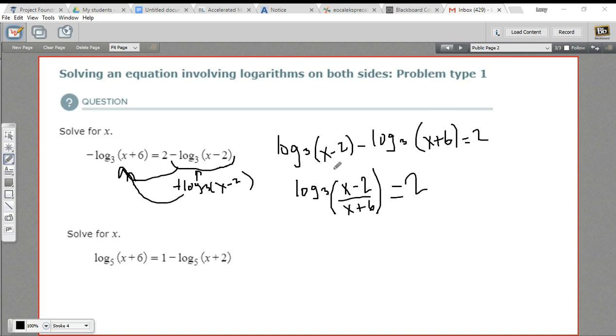At this point, we can convert this to an equation. What log₃ of some quantity equals 2 means is that you take this base, you put it to this power, and you get this. So our equation would be 3² = (x-2)/(x+6).